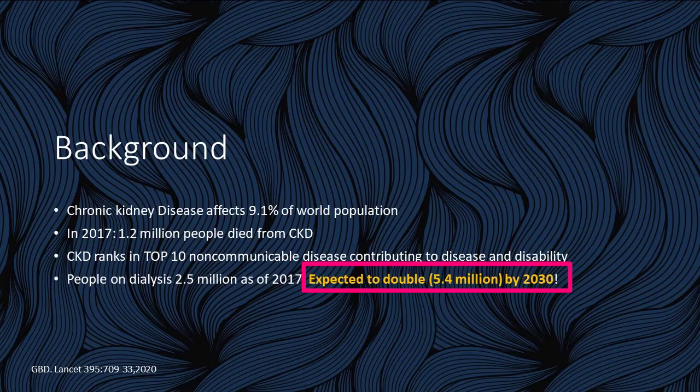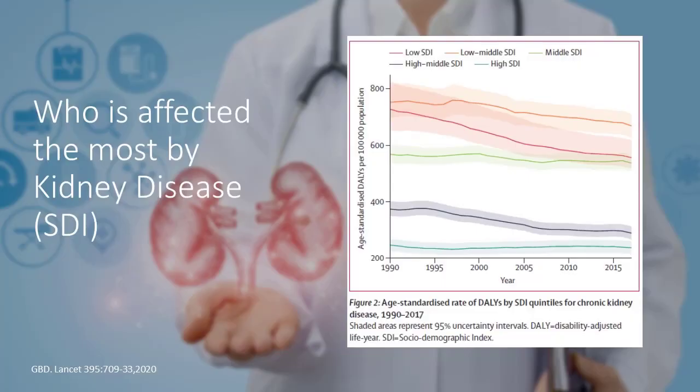But if you look at 2030, that number is expected to double to 5.4 million people. So it means that we absolutely have to think of ways to lower the risk of developing kidney disease. And who are the people that are most impacted through kidney disease? Well, it turns out it's the people that are the most vulnerable for just about everything: people with lower socioeconomic status. The less money that you have, the more likely you are to be affected. And part of that has to do with access to early healthcare and access to high quality foods.